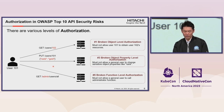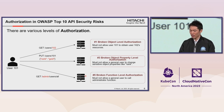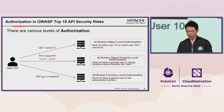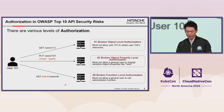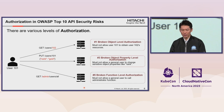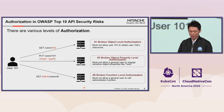And regarding number five, broken function level authorization: this risk allows access to prohibited functions. For example, a general user 101 can call administrator functions. The resource server must not allow a general user to call administrator functions. Like this, there are various levels of authorization, all of which are considered high security risks, so you can see how important authorization is.